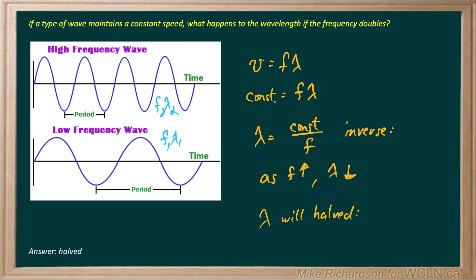If f times lambda is equal to the same constant, then we could literally do f1 lambda 1 equals f2 lambda 2, and then just start filling in what they suggest.